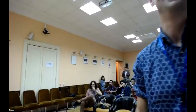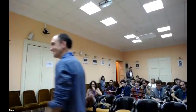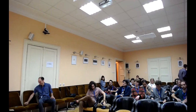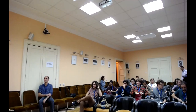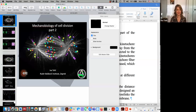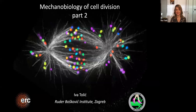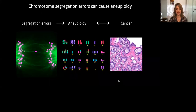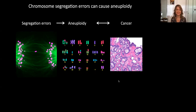This is the second part of Professor Tolic's lecture on biophysics. In this second part, I will start talking more about the outcomes of cell division that we discussed in the questions after the first part. I mentioned at the beginning that chromosome segregation errors can cause aneuploidy.